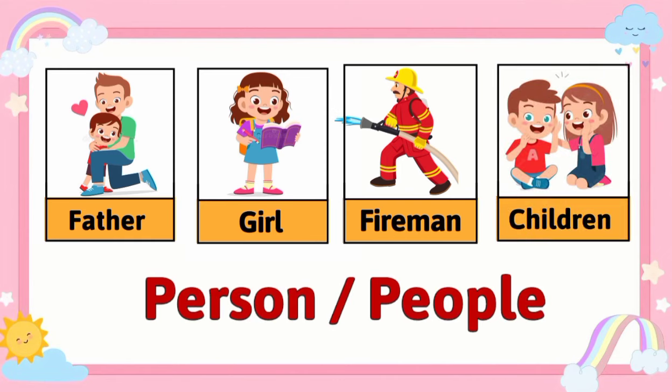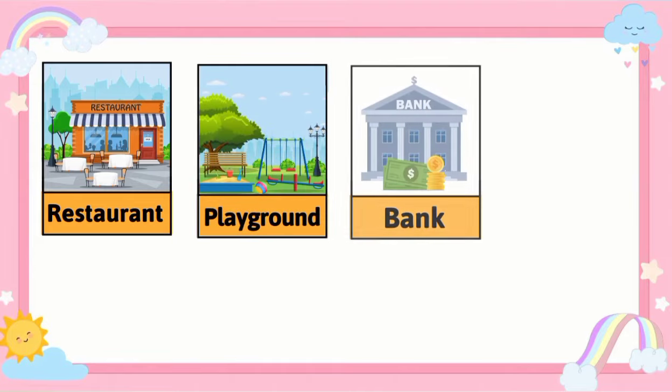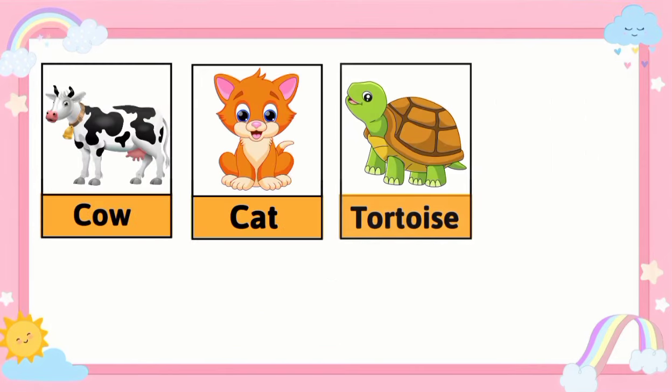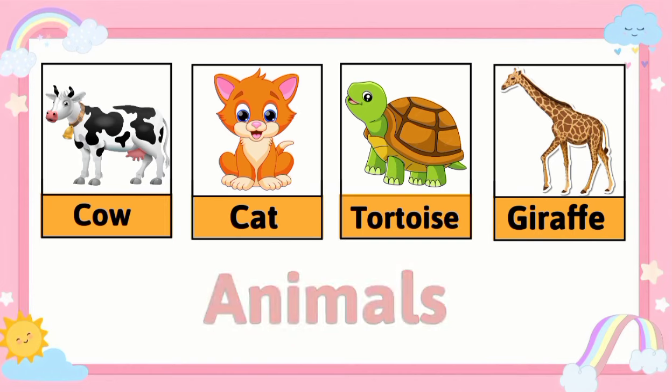These are examples of names of one person or a group of people. Restaurant, playground, bank, hospital, etc. — these are examples of names of different places. Cow, cat, tortoise, giraffe, etc. — these are examples of names of animals.